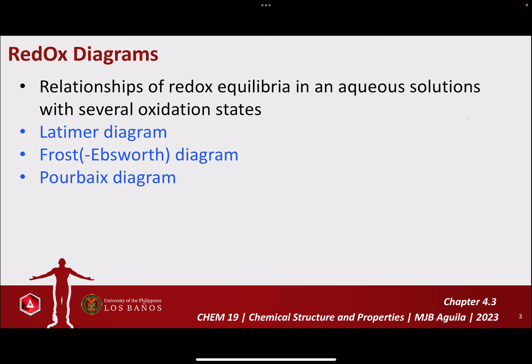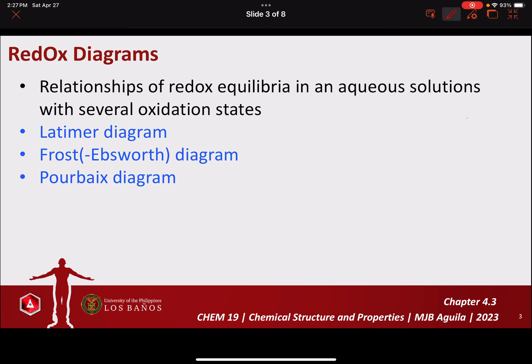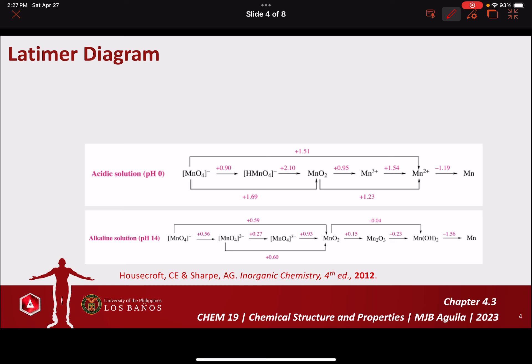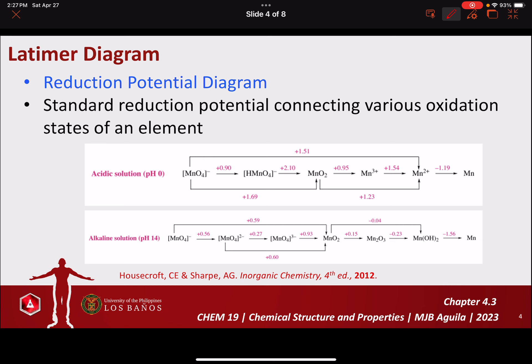This video lecture will only focus first on the Latimer Diagram. These are examples of the Latimer Diagram for manganese-containing species. It is referred to as the Reduction Potential Diagram because, as we can see in these diagrams, they show the standard reduction potential connecting various oxidation states of an element — in this case, reduction potential for manganese-containing species.